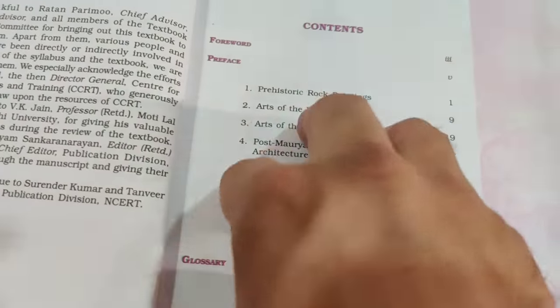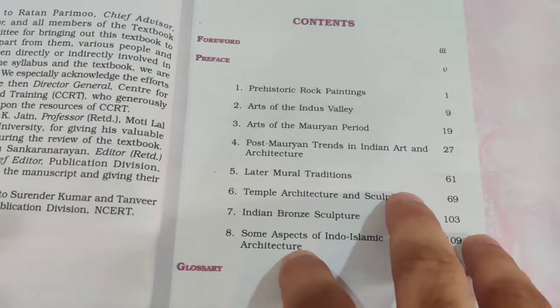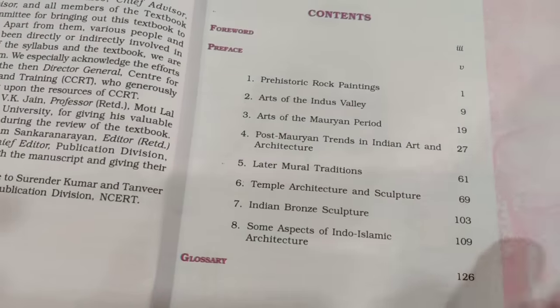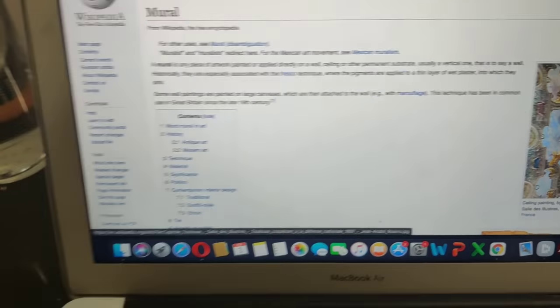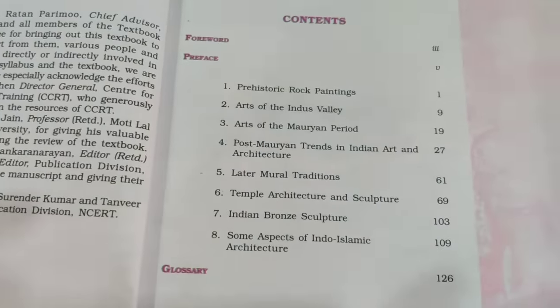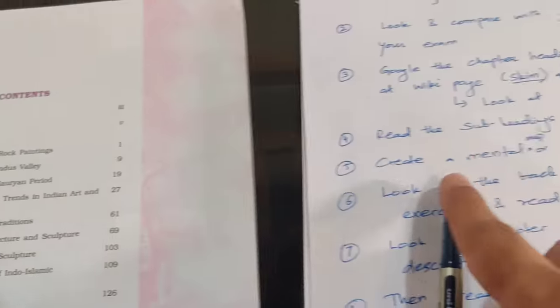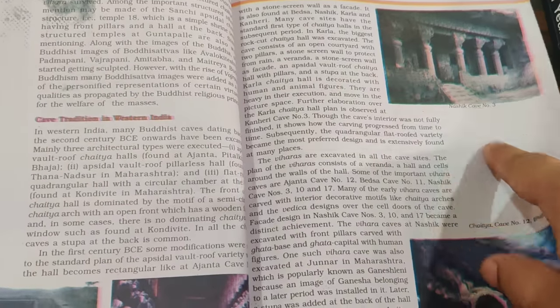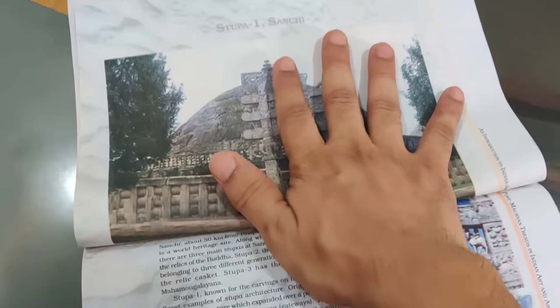The second step is to compare these topics with the syllabus — even if a topic isn't explicitly listed, if you know questions have been asked from it, you should prepare it. Then go ahead and Google some of these topics, like 'prehistoric rock paintings' or 'arts of Indus Valley,' to get a good idea and look at images. Then read the subheadings. In this particular book the format is more paragraph-based with fewer subheadings, but there are pictures and some index entries with extra information about specific pieces of architecture — you can read those before the main text.